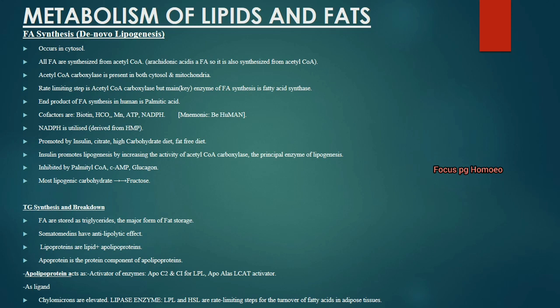Acetyl-CoA carboxylase enzyme is present in both the cytosol and mitochondria. Acetyl-CoA carboxylase is the main rate-limiting enzyme in fatty acid synthesis. The end product of fatty acid synthesis is palmitic acid. Co-factors to remember using the mnemonic B-HUMAN: B for Biotin, H for HCO3.